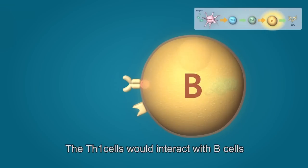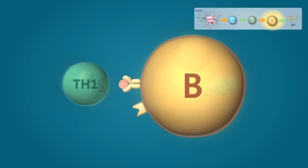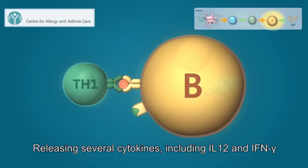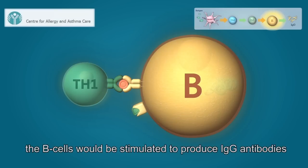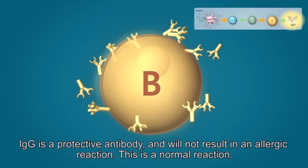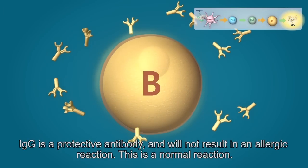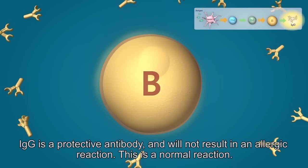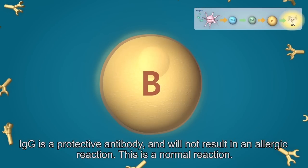The Th1 cells would interact with B cells, releasing several cytokines, including interleukin-12 and interferon gamma, and the B cells would be stimulated to produce IgG antibodies. IgG antibody is a protective antibody, and will not result in an allergic reaction. This is a normal reaction.